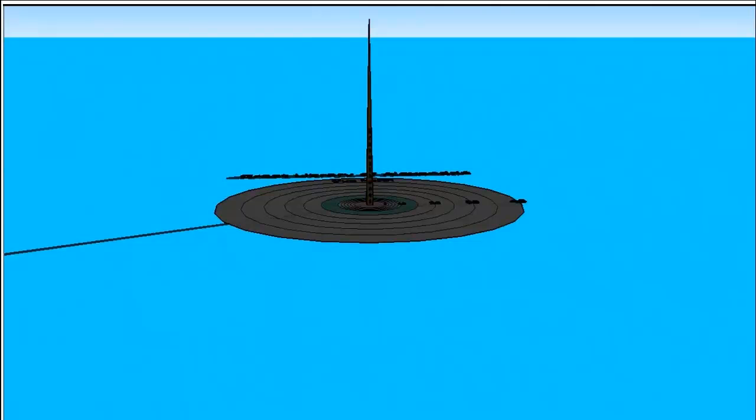The details of the equipment Eratosthenes used are lost to history, but just for fun let's do our own experiment using a tall pointy obelisk casting shadows onto concentric circles on the ground, marked in degrees. Eratosthenes did not have the degree system for angle measures. He would have used Egyptian units, but just for fun let's do the experiment using modern degrees and miles.